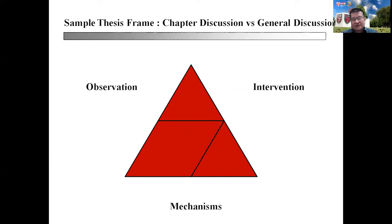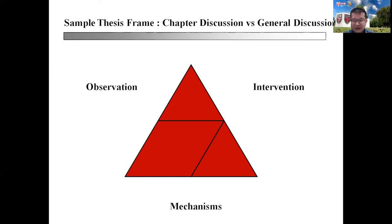This slide details the key differences between chapter discussion and general discussion. When talking about generating discussion, it is always important to talk about what has been observed in your experiments. As a result of your experimental intervention — whatever treatment you introduced — what can you conclude based on the outcome of the experiments after your intervention?